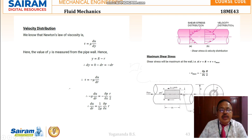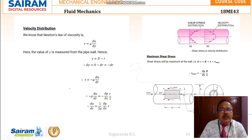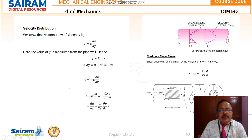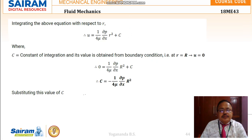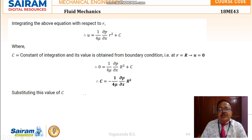Integrating du/dr with respect to r gives u = (1 / 4mu) · (del P / del X) · r² + C. The integration constant C is obtained from the boundary condition: at small r = capital R, exactly at the wall, the velocity of flow is 0, so u = 0.